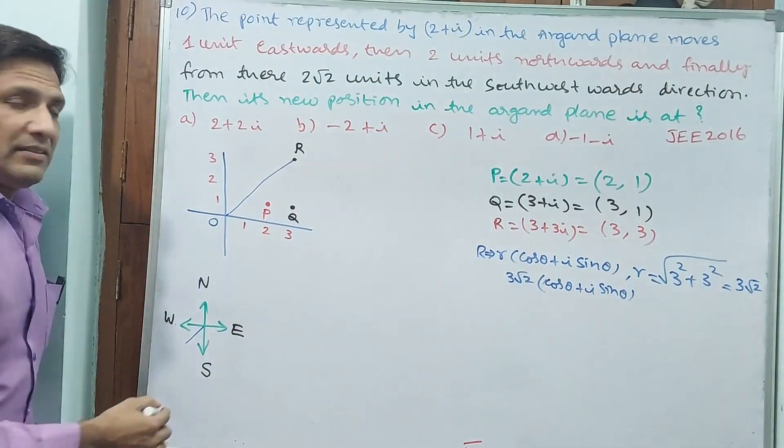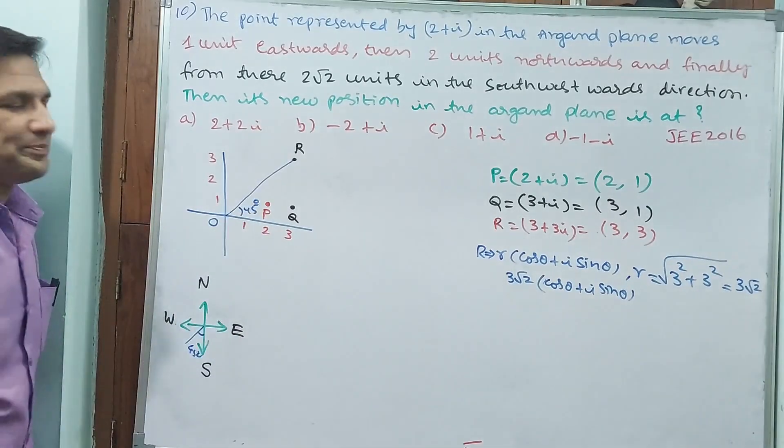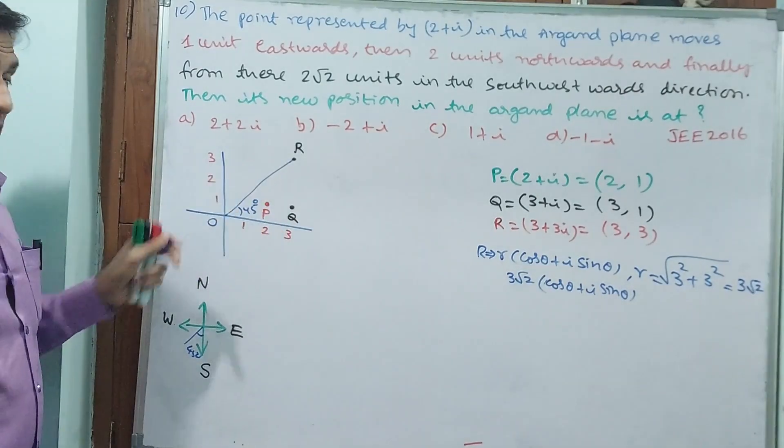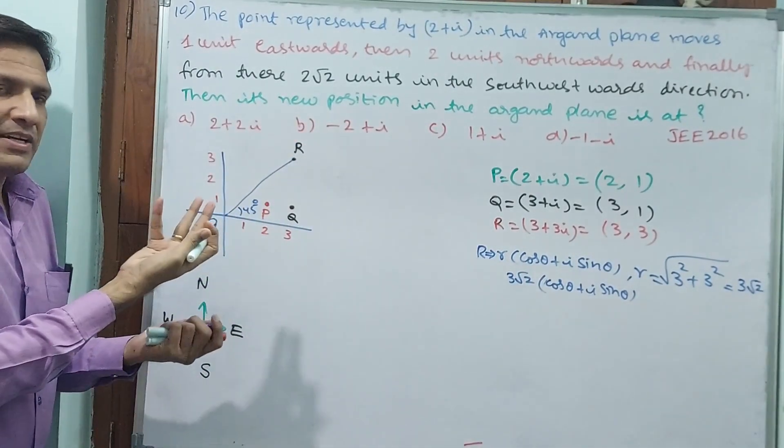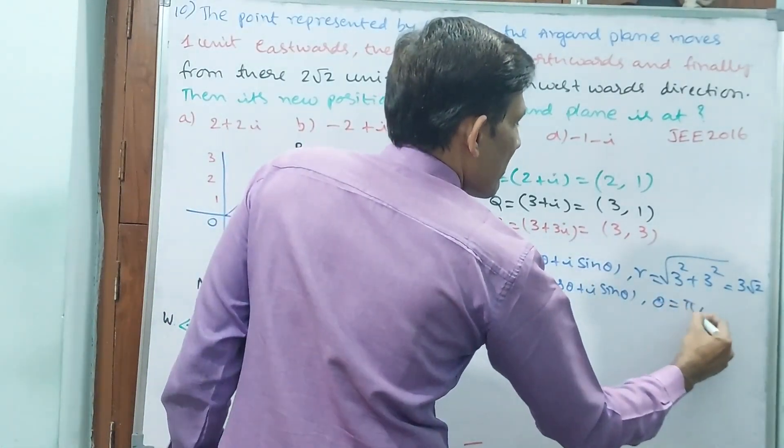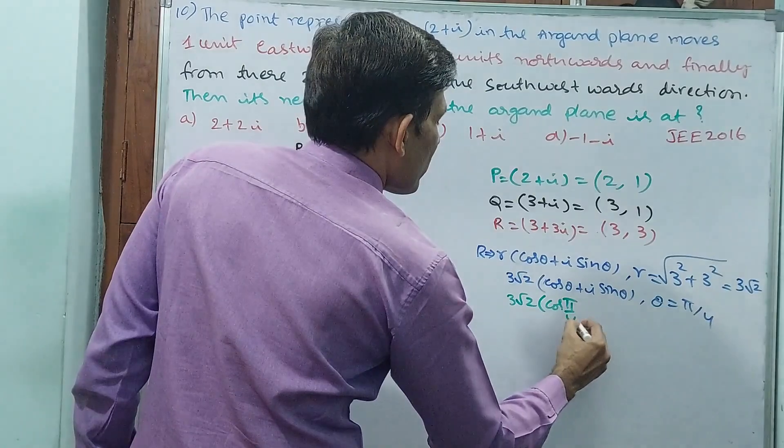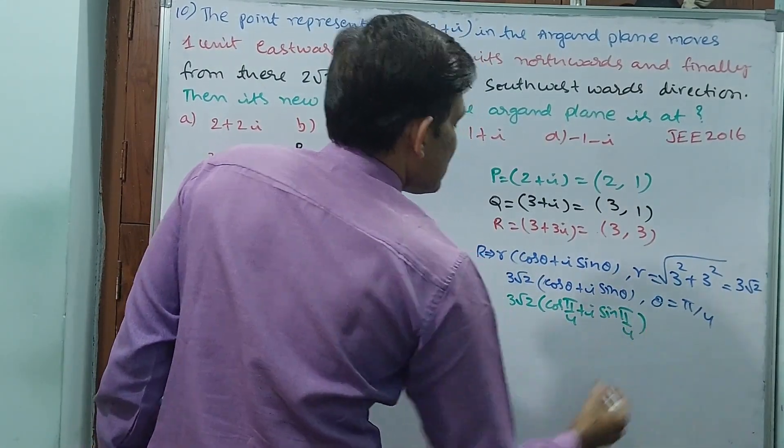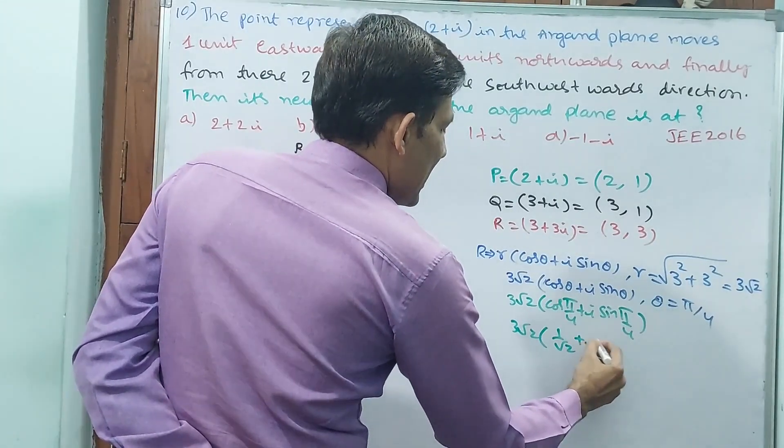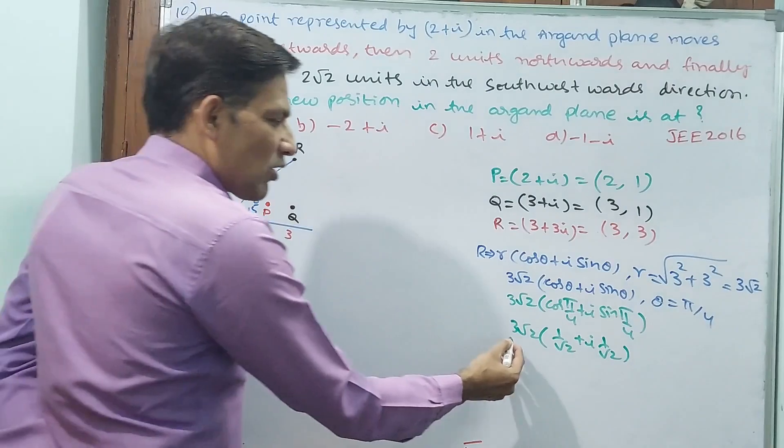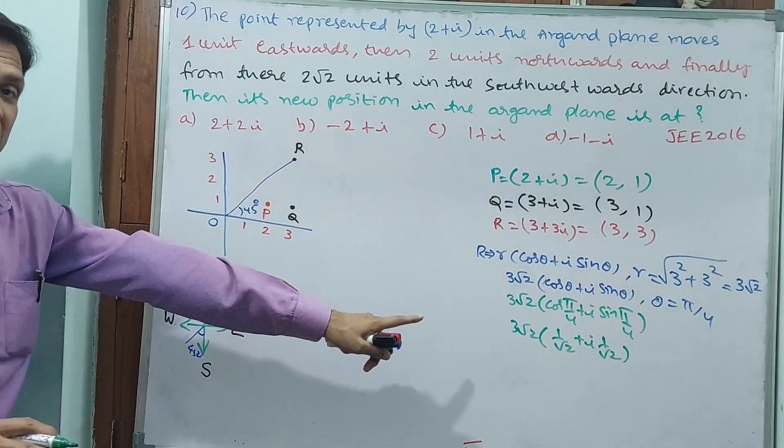Into r, sorry, r already we have written. 3 root 2 cos theta plus i sin theta. Now what is this theta? 45 degree. This is 45 degree, pi by 4. Why? Because exactly, horizontal means 0 degree, vertical means 90 degree. Southwest means 45 degree. That means theta is equal to pi by 4 or 45 degree. If it is 45 degree, what is this? 3 root 2 cos pi by 4 plus i sin pi by 4. That means 3 root 2 into cos pi by 4, 1 by root 2, plus i 1 by root 2. If you set inside automatically, root 2 root 2 going to get cancelled out. 3 plus i3. 3 plus i3, same thing has come. That is why I told already theta is pi by 4.